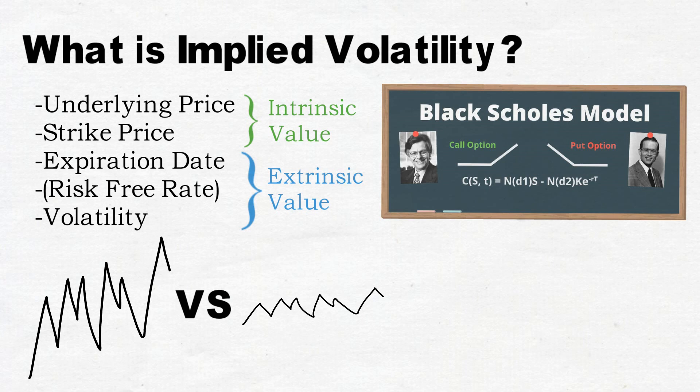For instance, a far-out-of-the-money option is far more likely to become in the money if the underlying asset is very volatile than if it's not.